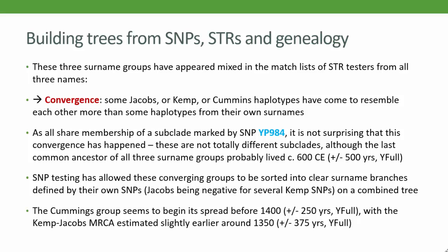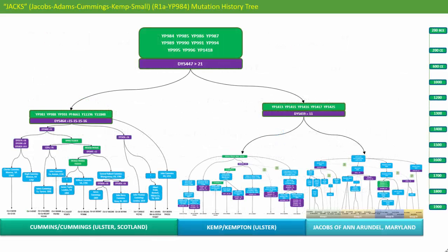So can we put all three surname groups onto a combined tree? Well, here we are — using the known SNPs to differentiate the three lines before the STRs take over. There's a crude timeline on the right, but we must stress the large margins of error here as the numbers of testers is still rather small. We can see how the Cummings family is the oldest, and it looks as if it started its own spread before 1400, not long into the surname era. The eventual Kemp and Jacobs lines split from each other probably around the same time or a bit earlier, but each has a much more recent common ancestor of their own, from probably around the early or mid 1600s. Creating this tree has become possible only since the advent of NGS testing, especially the Big Y, through which all of these SNPs have been discovered.